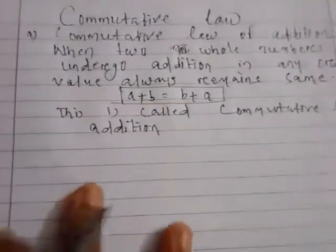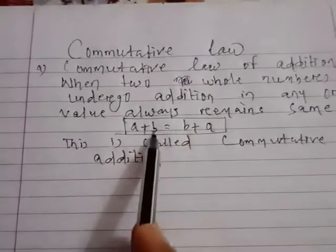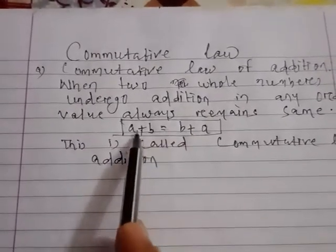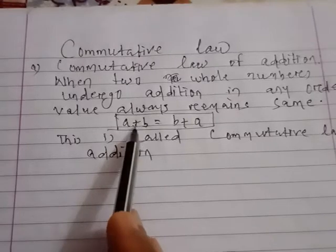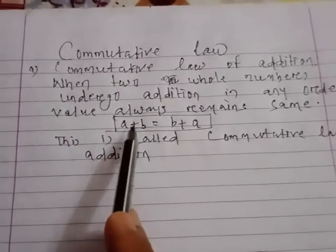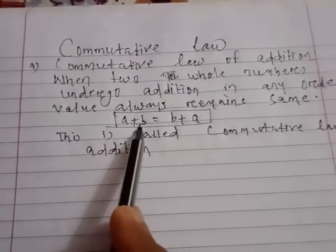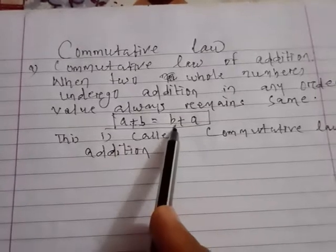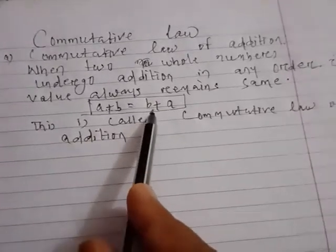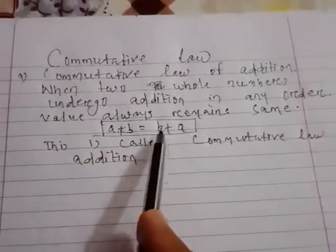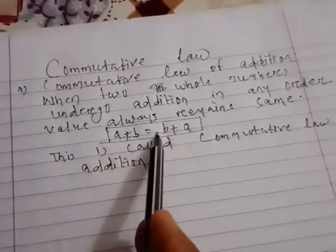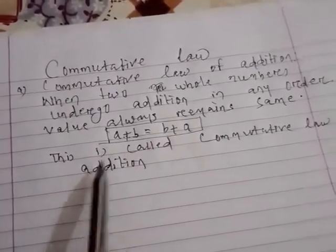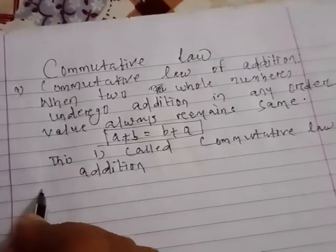For example, a plus b is equal to b plus a. Here a plus b is written on the LHS — that means left hand side. The right hand side has b plus a. So you have to prove that a plus b is equal to b plus a.